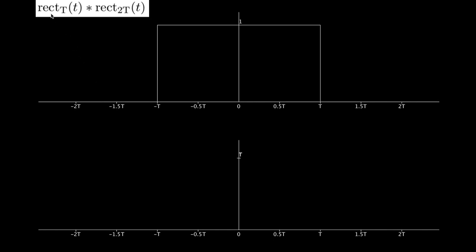This time we're going to look at the convolution between a rect(t) and a rect(2t) function. What I've drawn here is rect(2t) — the rect function has a width of 2t, going from negative t to t, with a height of 1. The convolution is a commutative operation, so I could have drawn rect(t) and slid rect(2t), but I've done it this way.